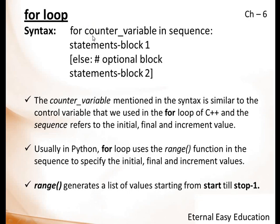The counter_variable mentioned in the syntax is similar to the control variable that we used in the for loop of C++. In C++, for will have three segments: starting point, final end, and the increment value, and also a condition checking. Usually in Python, for loop uses range. Here we are going to see a new built-in function range. This is going to handle the three things: initial, final, increment values.